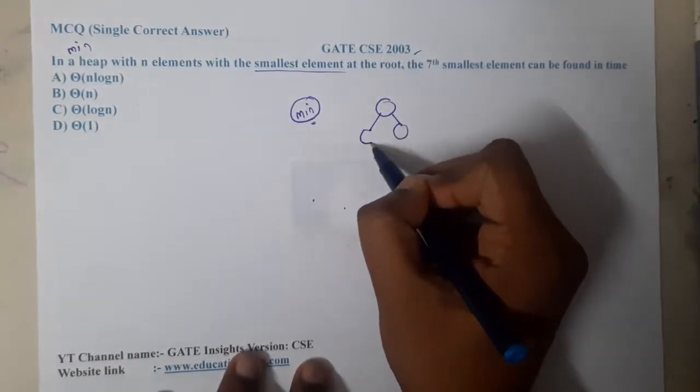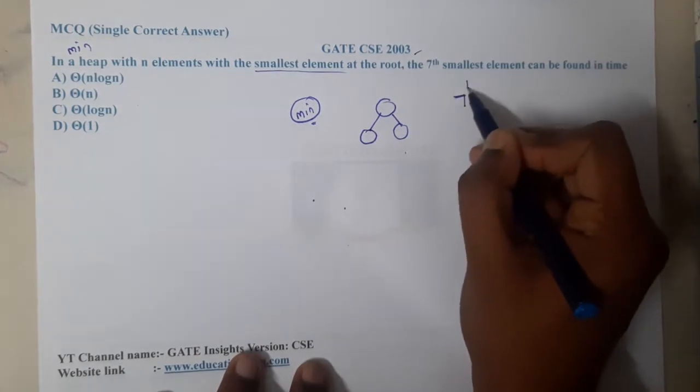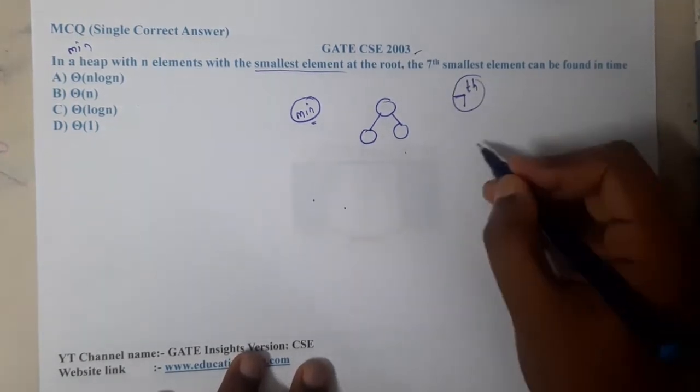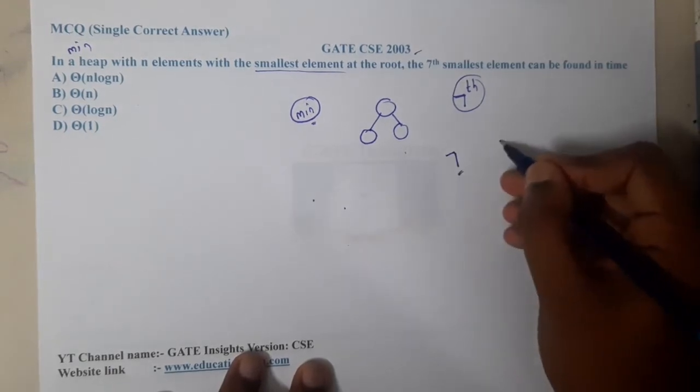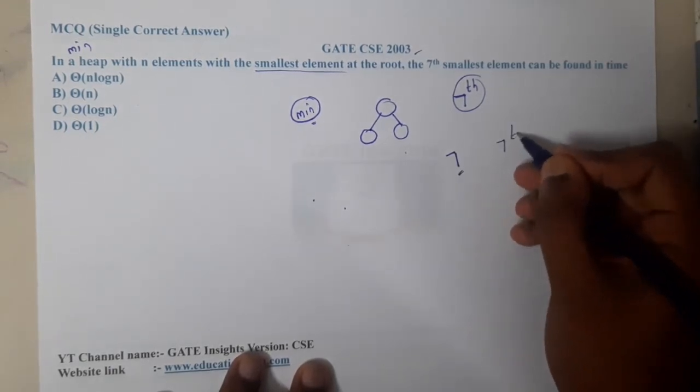the minimum value will always be at the root. So to get the seventh smallest element, if you do deletion seven times, what will be the result? At the end, you will get the seventh least element. Each deletion will take how much cost? The deletion cost is log n.